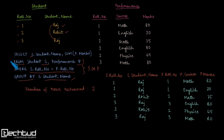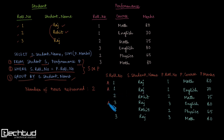Next we perform the GROUP BY after the FROM and WHERE steps. We are grouping using student name. We have two different student names — Raj and Rohit — so we form Group A and Group B. The rows corresponding to Raj all go into Group A, and the rows corresponding to Rohit go into Group B.